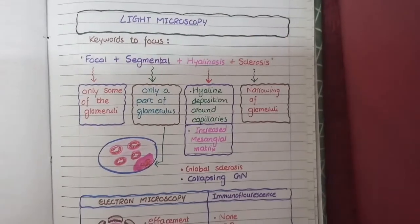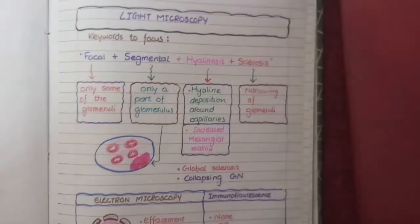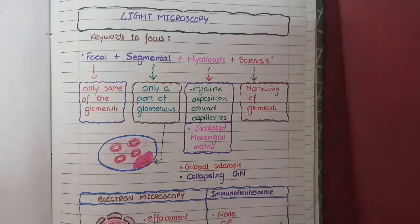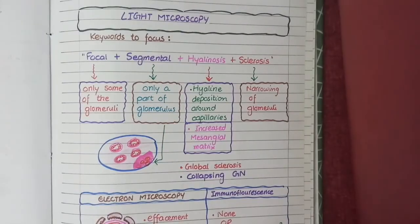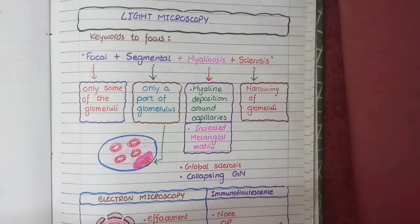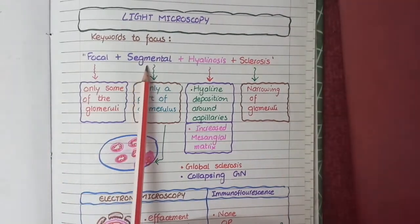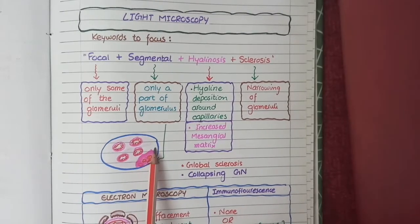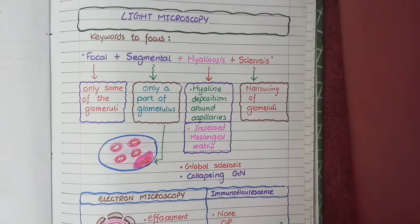For the morphology of focal segmental glomerulosclerosis, the keywords are: focal, segmental, hyaline nodules, and sclerosis. 'Focal' means not all glomeruli are damaged — only some are affected while the rest are spared. 'Segmental' means that even within one glomerulus, not all capillary loops are affected, only a segment. As seen in the diagram, this gives the focal and segmental pattern.